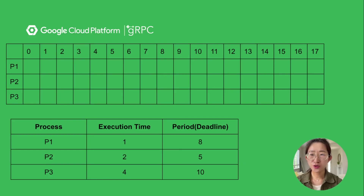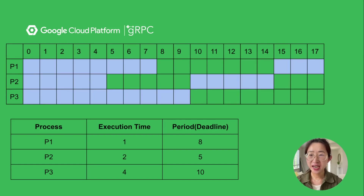The processor always focuses on executing the task with the highest priority based on its deadline. Here is a walkthrough of the algorithm with an example. We have three processing tasks shown in the bottom table. Each task has execution time and period. The top table shows which process is scheduled at a certain time. Each block with a number labeled is a time slice, and the alternating color in the block indicates the task period. P1's period is 8, so its deadline is at the end of block 7. P2's deadline is 5. P3 is 10.